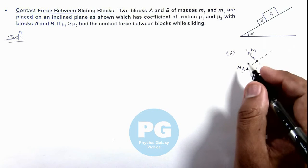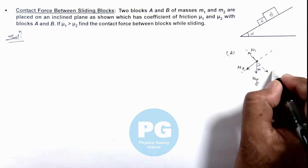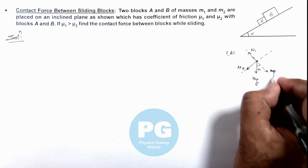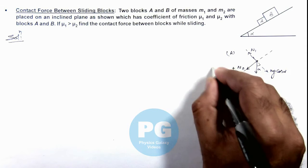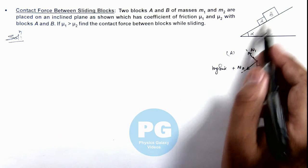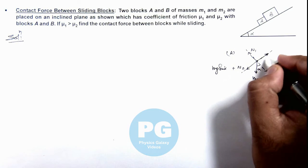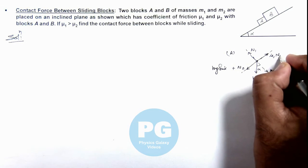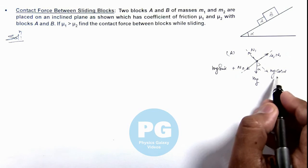The angle is alpha. The component of weight along the incline is mg sin(alpha) and normal to the incline is mg cos(alpha). During sliding, block A experiences friction in the opposite direction which is mu1 times N1. The value of N1 can be taken as mg cos(alpha).